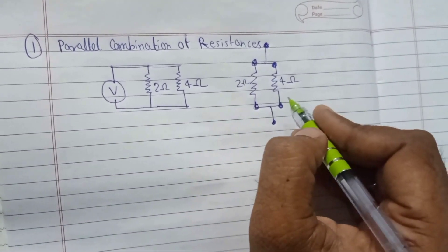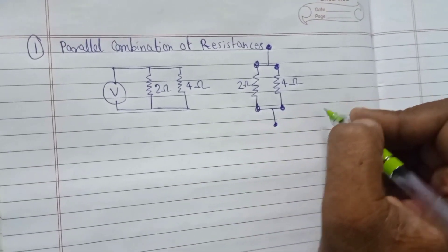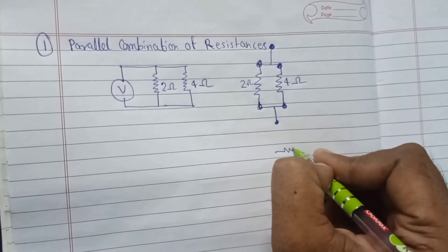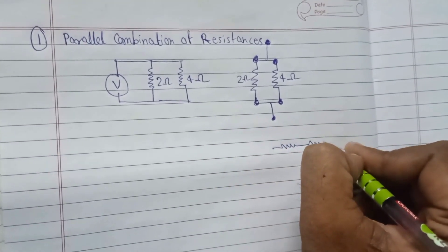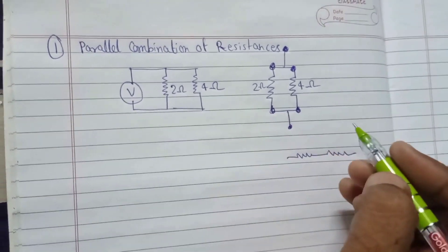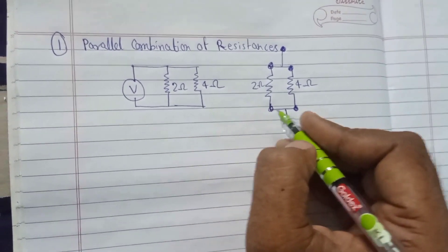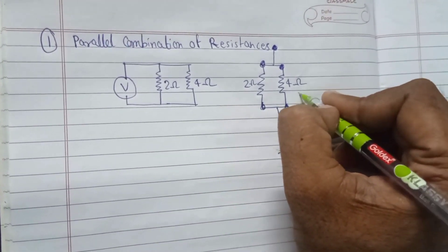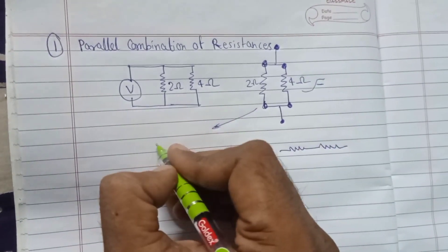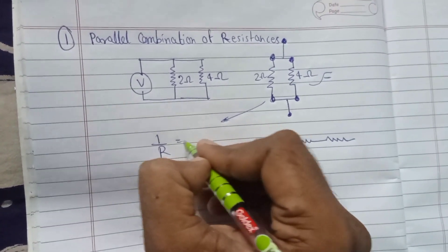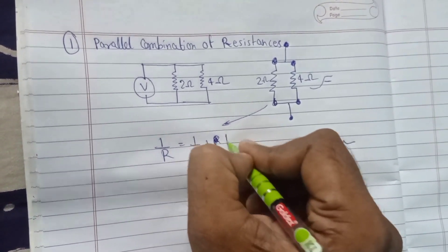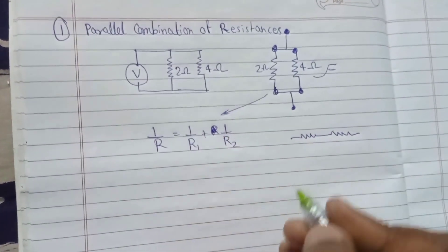In parallel combination, the two endpoints of resistances are matched end to end. In series combination, resistances are connected back to back — one after another. For parallel combination, the resultant resistance is calculated by the formula: 1/R = 1/R1 + 1/R2.